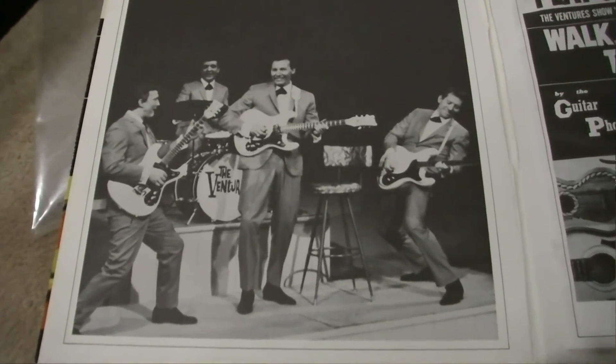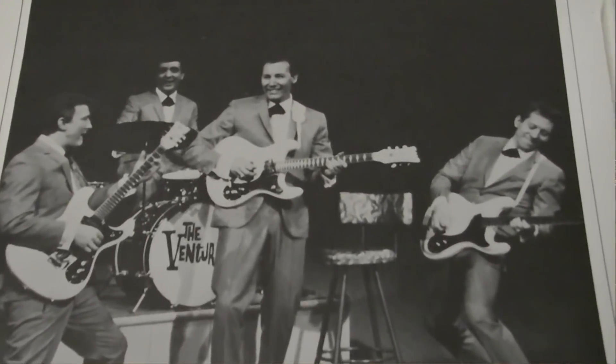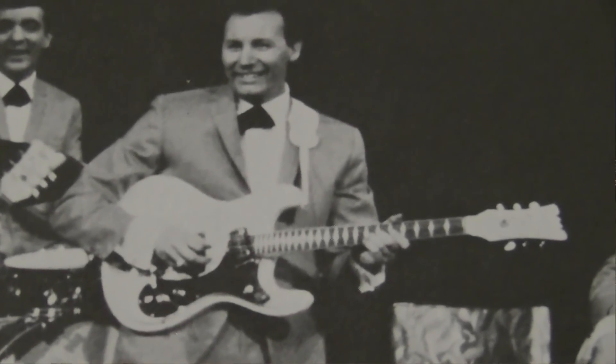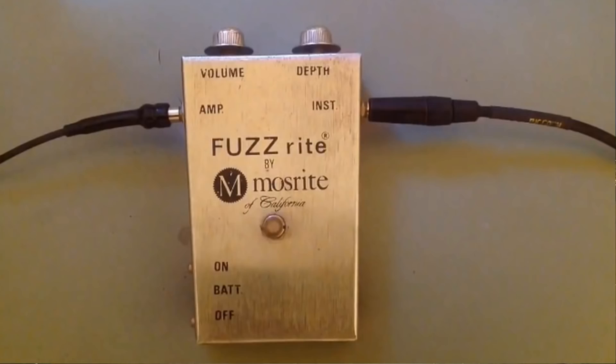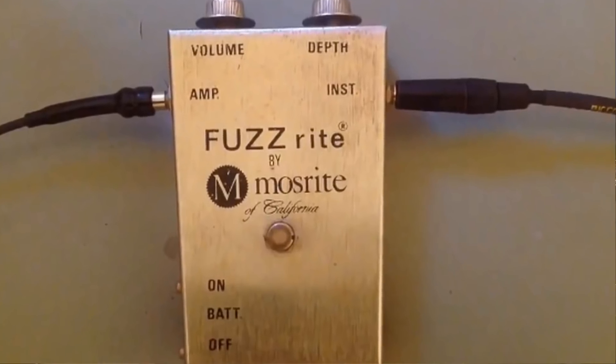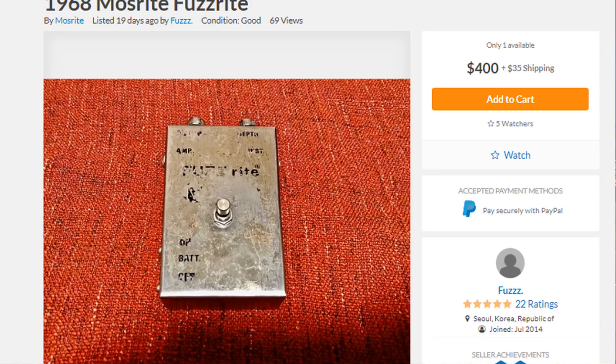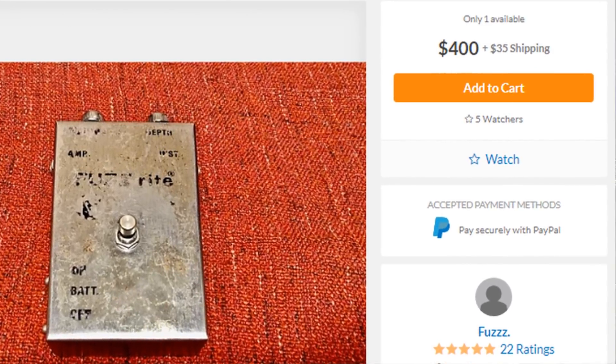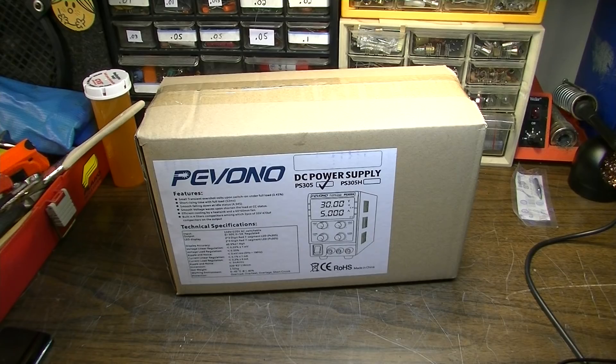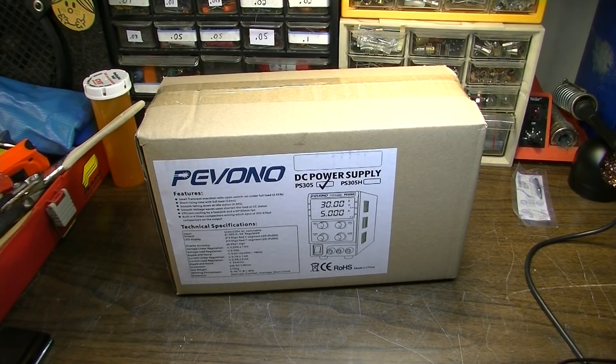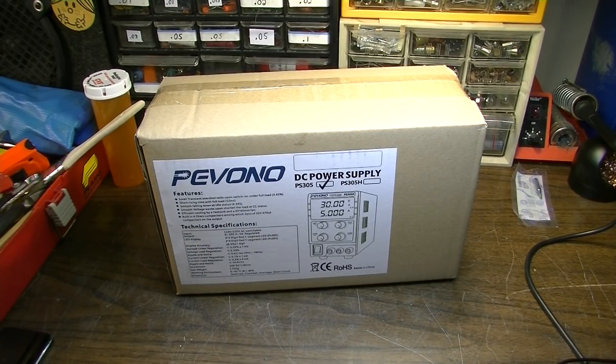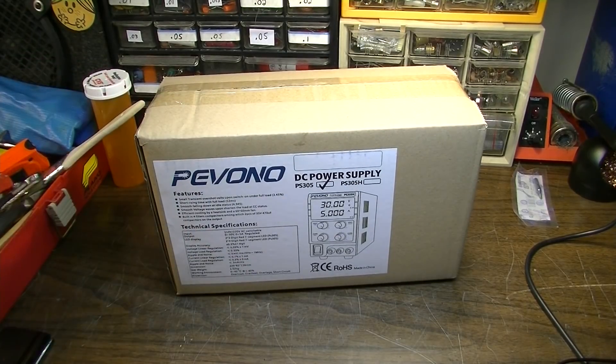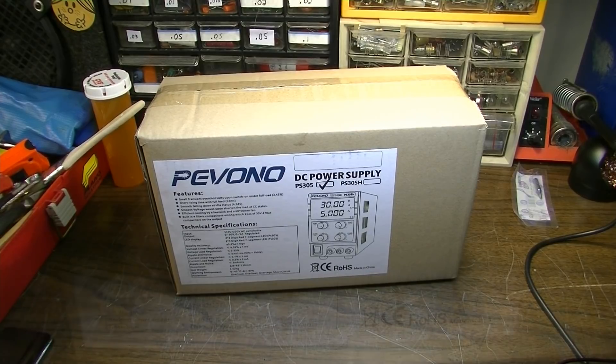Whenever Nokie Edwards of the Ventures passed away recently, I kind of got the itch to build a replica of the fuzz pedal that is sort of believed to have been used by him. No one knows really for sure. They think it would have been something similar to the Moserite fuzz circuit. So what we're going to do in this video, I'm going to try to replicate in a roundabout way that Moserite fuzz circuit. And in the process of doing that, I thought we might test out this DC power supply at the end by powering up our little prototype.